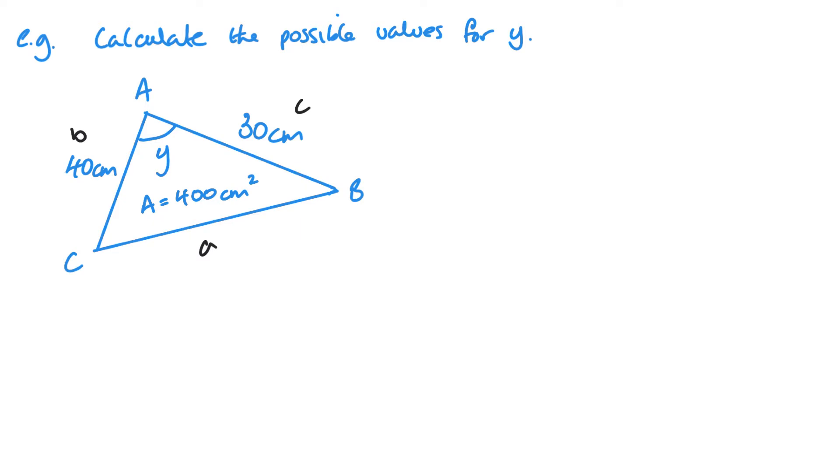I'm finding essentially that angle A. So I've got area equals a half B C sine A. Area is 400, B is 40, C is 30, and it's sine Y which is what I'm trying to find.